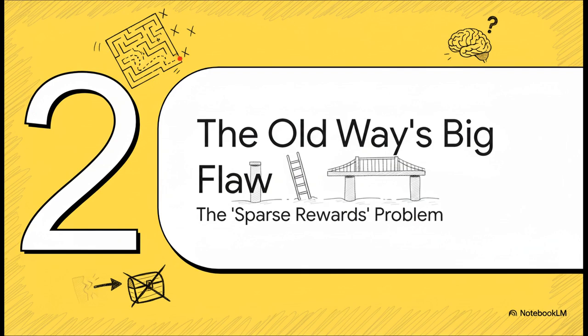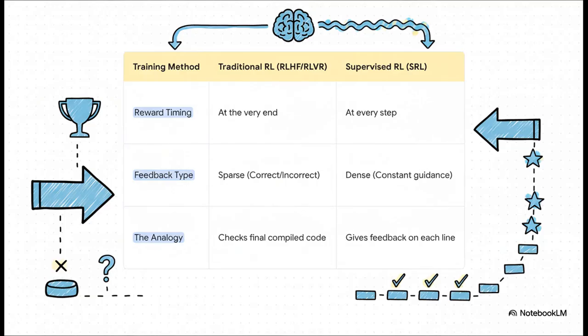So to really get why SRL is such a big deal, we have to talk about the huge problem it solves. And that problem has a name: sparse rewards. This chart just lays it out perfectly.